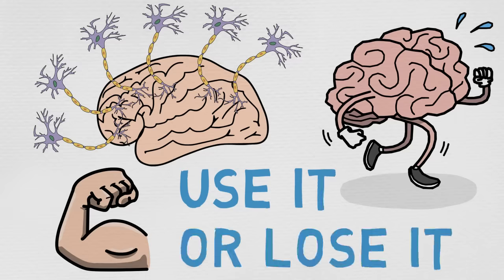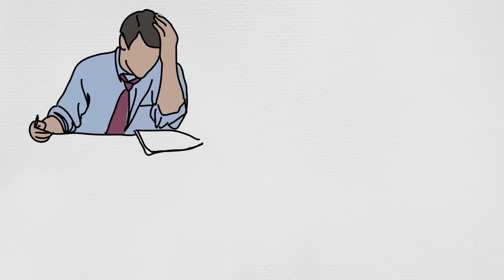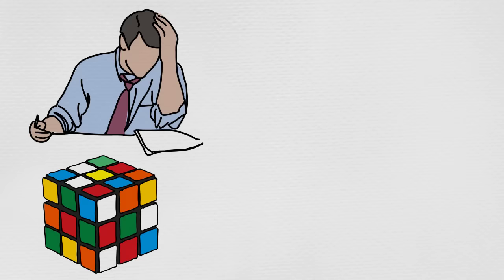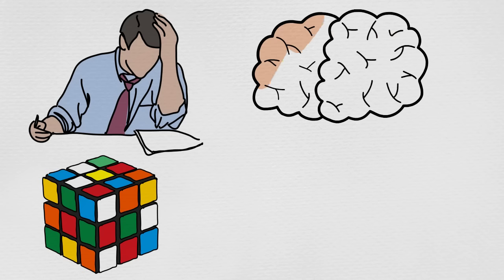However, that doesn't quite explain why exercise is making our brains grow new neurons. Most people would consider using your brain as doing something creative or logical, like writing a book or solving a puzzle. But that's not really what the brain's main function is. The only reason why humans have such big brains is for one purpose and that purpose only.